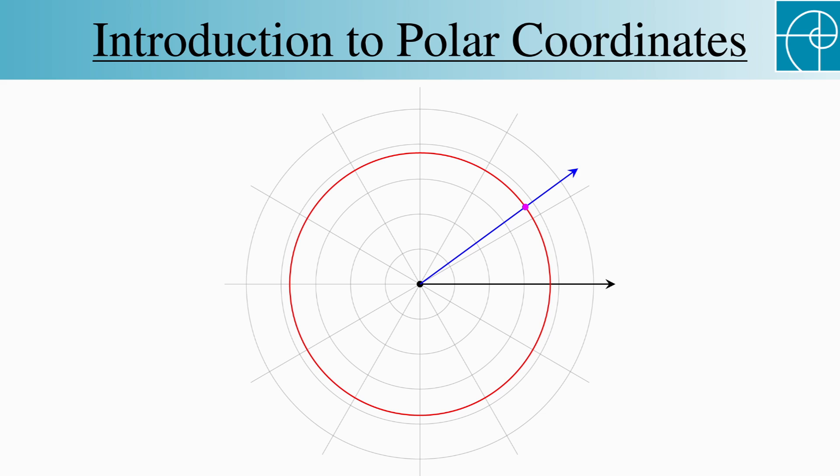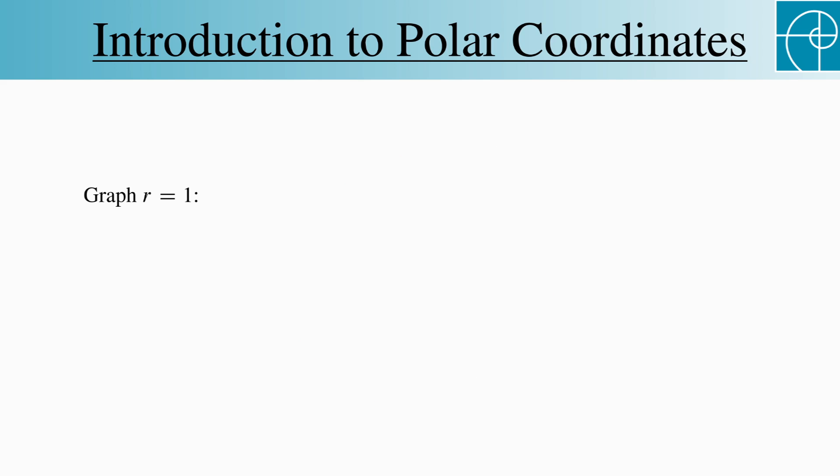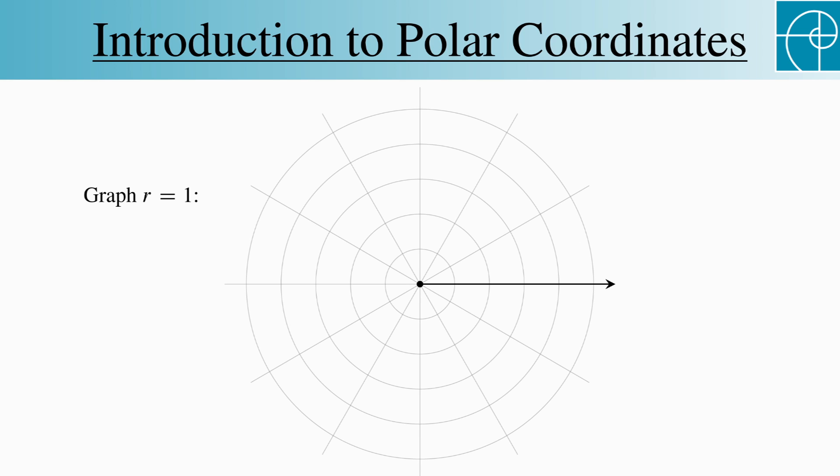Let's now graph two functions using polar coordinates. We'll start with r equals 1. The set of points satisfying this equation are those whose distance from the origin is 1, so the graph of this is a circle of radius 1 centered at the origin.